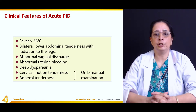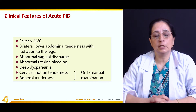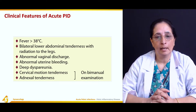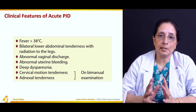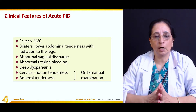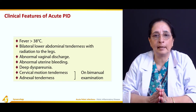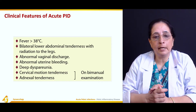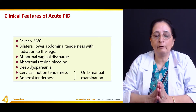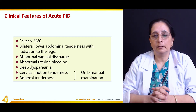Clinical features of acute pelvic inflammatory disease include fever, which is very common, usually more than 38 degrees Celsius. Patients typically complain of lower abdominal pain with bilateral lower abdominal tenderness radiating to the legs. There is also abnormal vaginal discharge, uterine bleeding, and dyspareunia — painful sexual intercourse — which is a very common feature. On bimanual examination, movement of the cervix causes pain and tenderness, known as cervical motion tenderness.